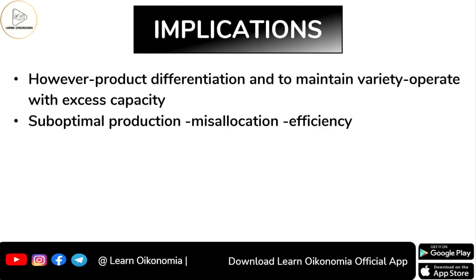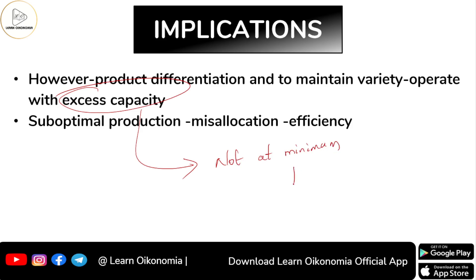Even though in the long run firms can attain productive efficiency, the intention to maintain diversity leads firms to operate under excess capacity. When there is excess capacity, firms are not utilizing their full capacity, leading to a sub-optimal level of production — not at the minimum point of AC — which causes misallocation and reduced efficiency.